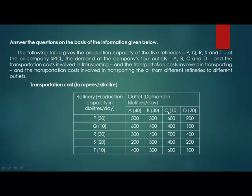Now the demand of C is 10 kilolitres per day. Again, the minimum cost is 400 rupees per kilolitre, which is given by Q and S. But Q has already utilized its capacity for D, so we will switch to S. S gives 10 kilolitres of its production to C at 400 rupees per kilolitre. So C's demand is met by S.